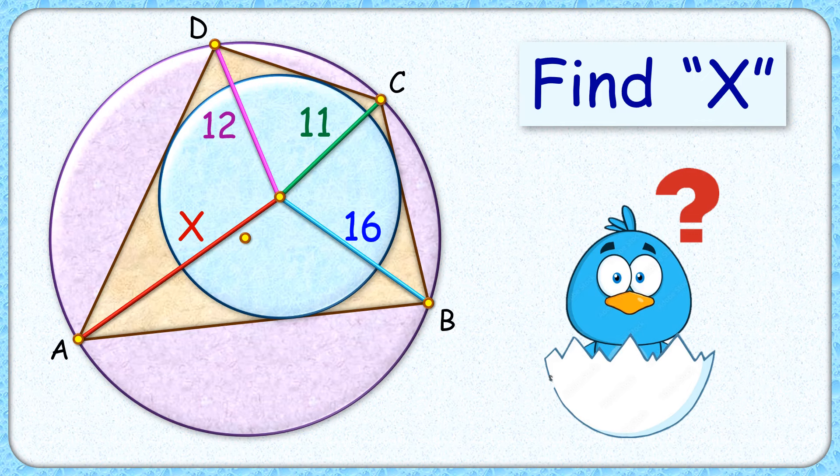Welcome to this interesting question. Given is ABCD, a bicentric quadrilateral - with respect to the purple circle it's a cyclic quadrilateral, and with respect to the blue circle it's a tangential quadrilateral. The vertices of this quadrilateral are joined to the center of the blue circle. The exciting part is, with the given dimensions of 16, 11, and 12, we have to find the length of this red line segment, or the value of x.